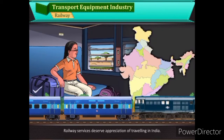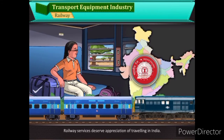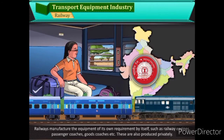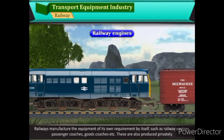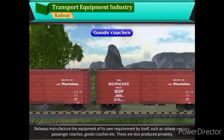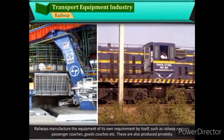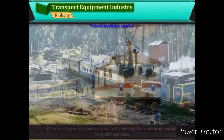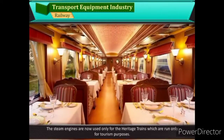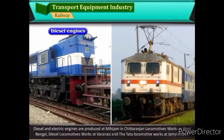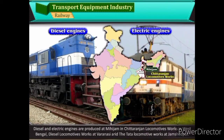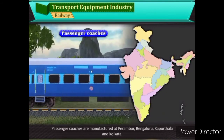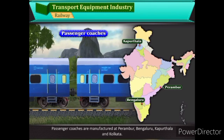Railway: Railway services deserve appreciation for travelling in India. Railways manufacture equipment for their own requirements, such as railway engines, passenger coaches, goods coaches, etc. There are three types of railway engines. Steam engines are now used only for heritage trains run for tourism purposes. Diesel and electric engines are produced at Chittaranjan Locomotive Works in West Bengal, diesel locomotive works at Varanasi, and Tata locomotive works at Jamshedpur. Passenger coaches are manufactured at Perambur, Bengaluru, Kapurtala, and Kolkata.